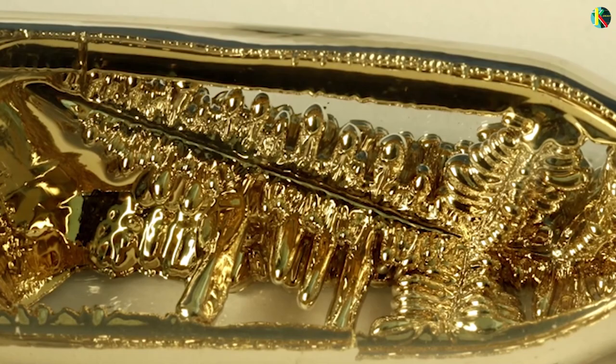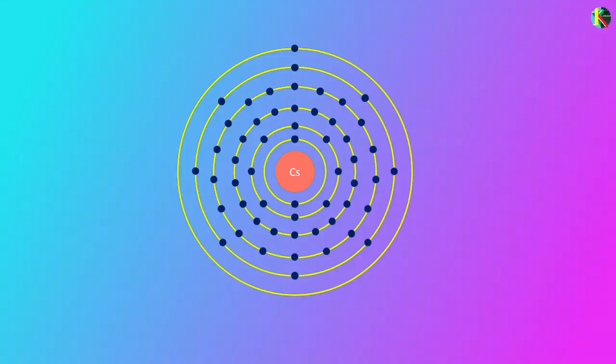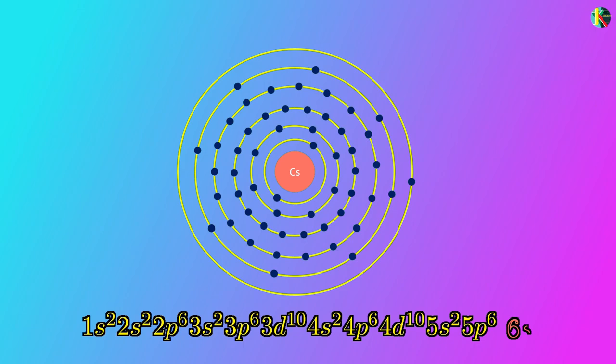Cesium has 55 electrons of which 54 electrons create symmetric electronic distribution just like xenon, and the last electron occupies 6s electronic state. So, the chemistry of cesium is determined by that lone 6s electron. Now, it is typical for the quantum energy state of such a valence electron to be split by fine structure. But, the inner core of the electrons of cesium is perfectly symmetrical and has zero angular momentum. So, there is no fine structure.